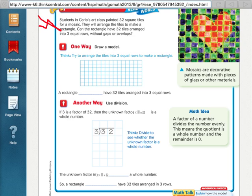Here let me just go ahead and read the problem. It says students in Carla's art class painted 32 square tiles for a mosaic. They will arrange the tiles to make a rectangle. Can the rectangle have 32 tiles arranged into 3 equal rows without gaps or overlaps? In other words, can we take 32 tiles and make 3 full equal rows?